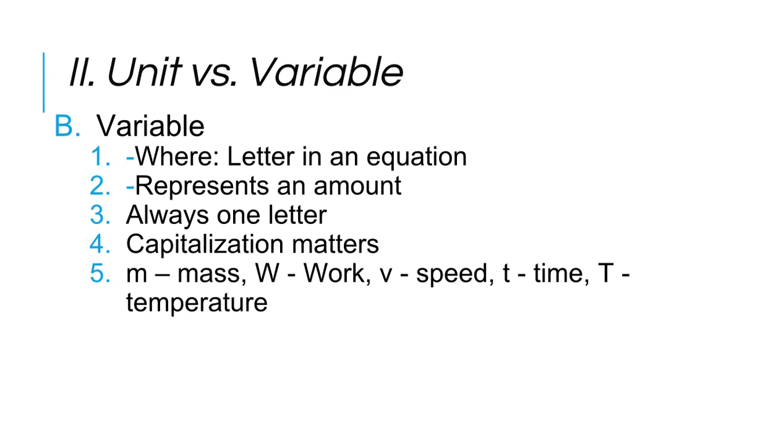The other part we need to know is what is a variable. Where you're going to find the variable is in an equation, and it represents an amount. It always is going to be one letter. On your sheet, remember when we have two letters in an equation that are next to each other, that tells us we have to multiply. So it's really important that you recognize that variables always have one letter, because if they had two, we wouldn't know whether it was two different equal amounts and we now have to multiply them, or if it's just one.